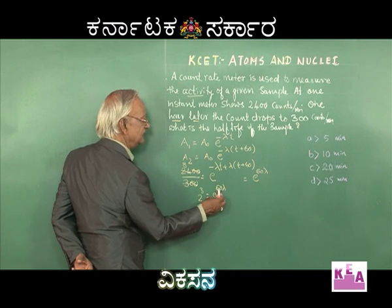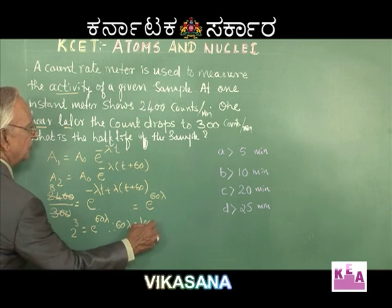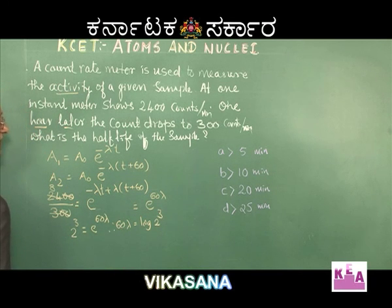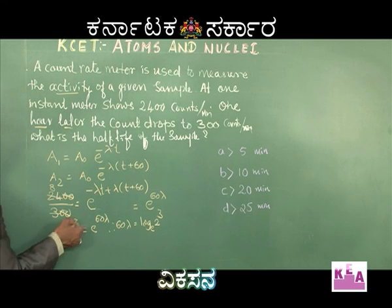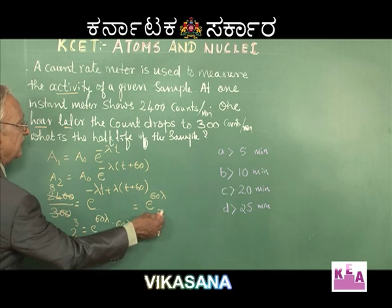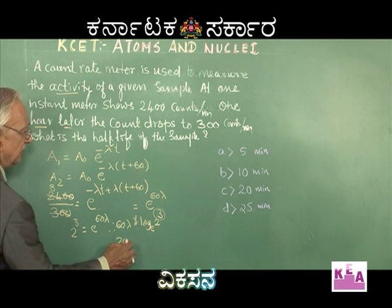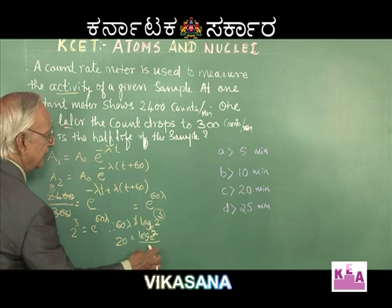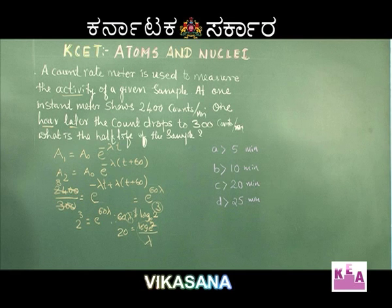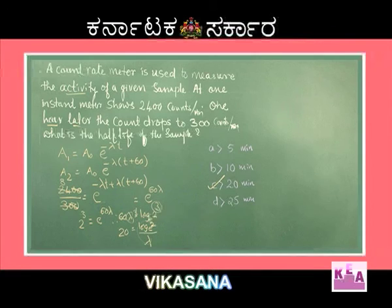From e^(60λ) = 2³, we write 60λ = ln(2³) = 3ln(2). Dividing both sides by 3 gives 20 = ln(2)/λ. This is exactly the expression for half-life (T½ = ln2/λ), giving T½ = 20 minutes. The correct choice is C.